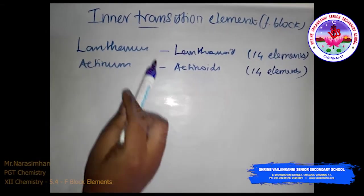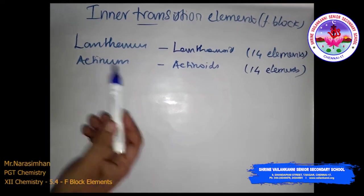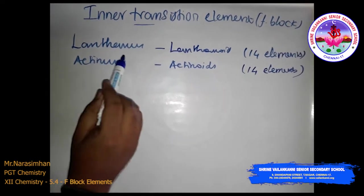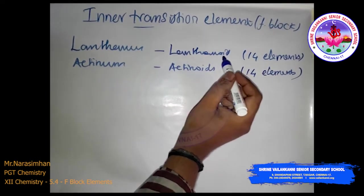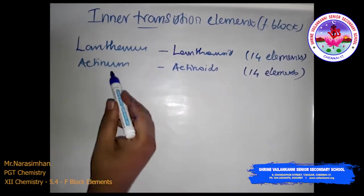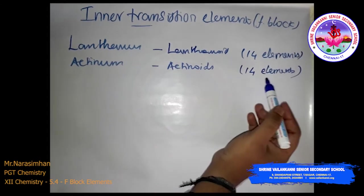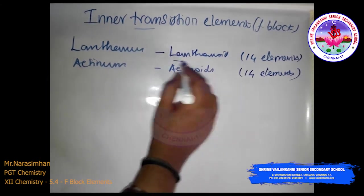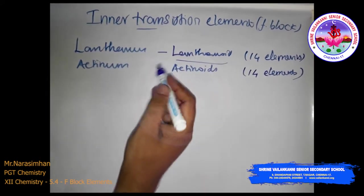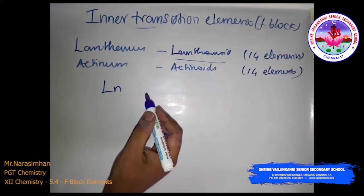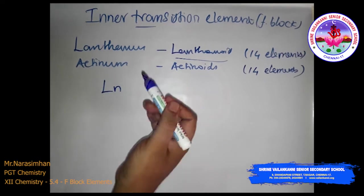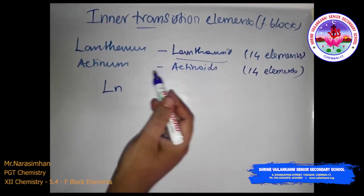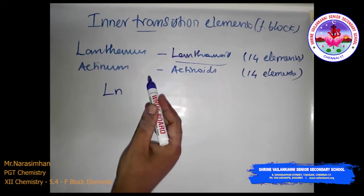The next topic is inner transition elements, or f-block elements. They contain lanthanum and actinium series. The lanthanum series is called lanthanoids, having 14 elements, and actinium series is called actinoids, also having 14 elements. Lanthanum closely resembles the lanthanoids, so the general symbol used is Ln. Similarly, actinium is included in the discussion of actinoids besides the 14 elements constituting that series.